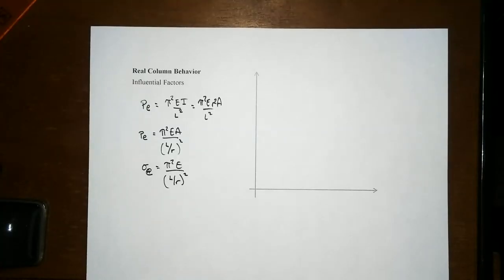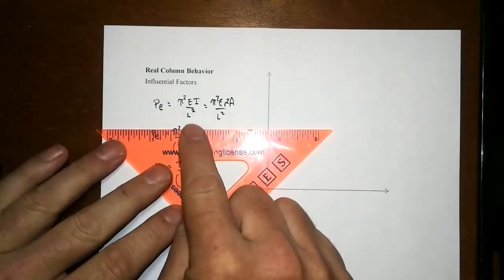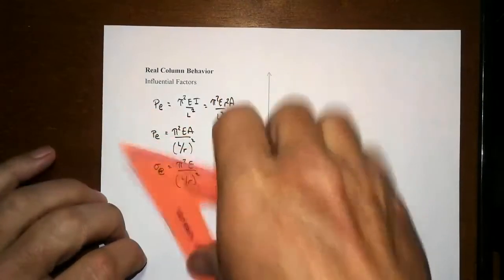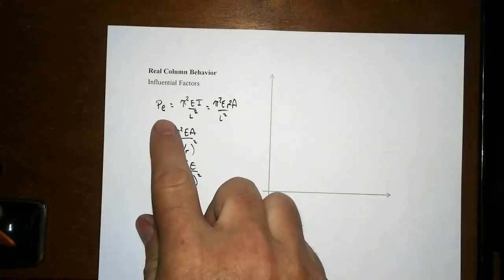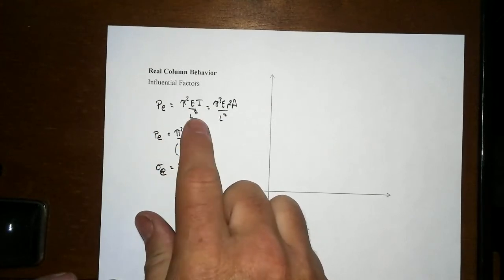When we do tests of real columns, we find out that they behave differently than this Euler-buckling model, which we've derived and shown. This elastic or Euler-buckling model is P sub E equals pi squared EI over L squared.